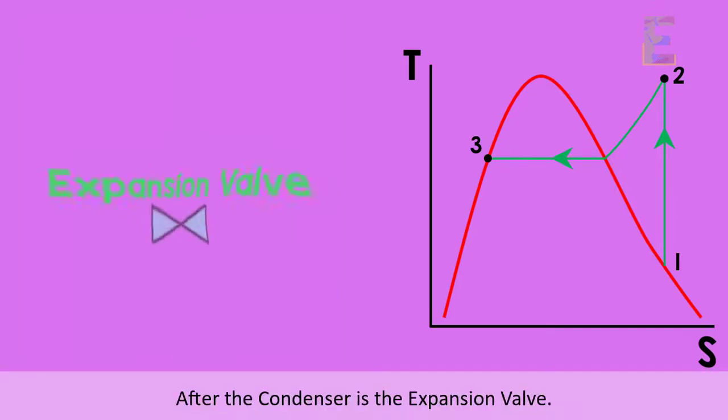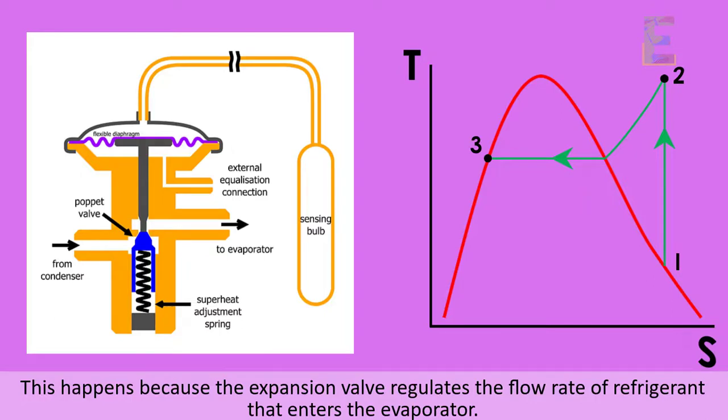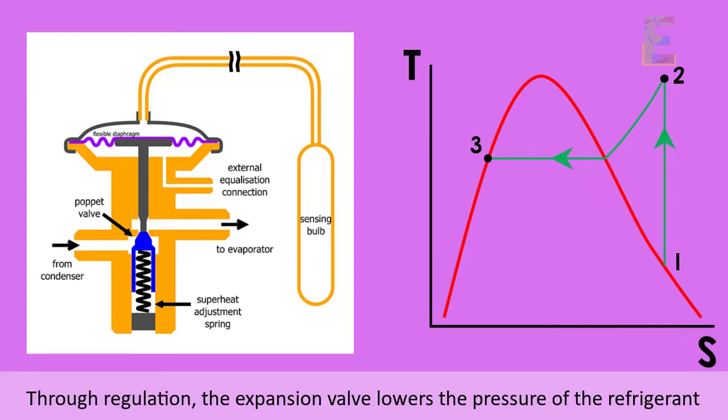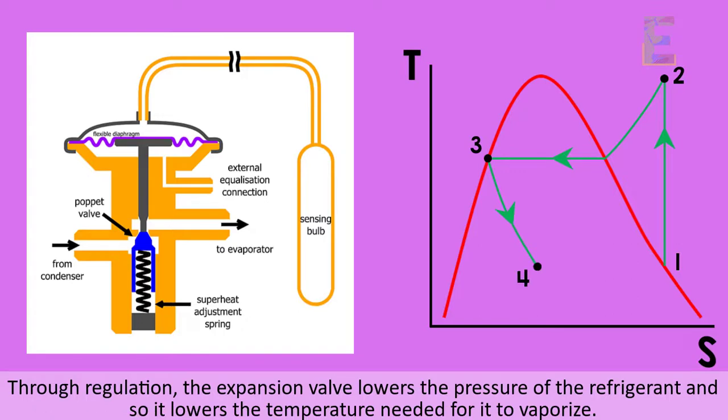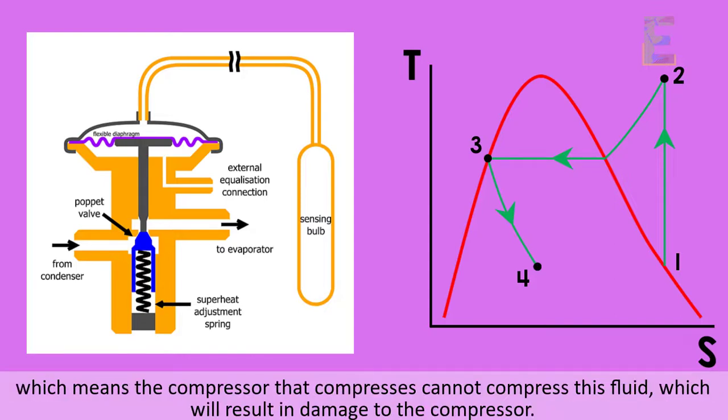After the condenser is the expansion valve. The refrigerant enters the expansion valve as a liquid and exits as a mixture of liquid and partly vapor. This happens because the expansion valve regulates the flow rate of refrigerant that enters the evaporator. Through regulation, the expansion valve lowers the pressure of the refrigerant and so it lowers the temperature needed for it to vaporize. The lower the pressure, the lower the boiling point. In addition, the expansion valve ensures that the refrigerant exiting the evaporator is a superheat and no liquid is present as liquids are incompressible, which means the compressor cannot compress this fluid, which will result in damage to the compressor.